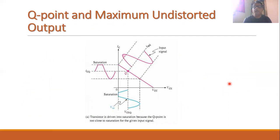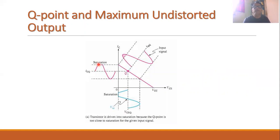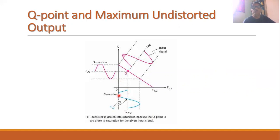Now let us see what will happen when we change the position of the Q point. Suppose the Q point is slightly on the upper side — that is, it is closer to the saturation point. Then when the input signal is applied, the ICQ will go into saturation, and the collector current curve portion will be clipped off.